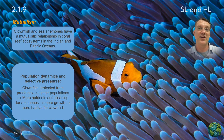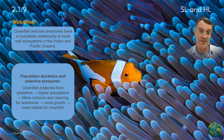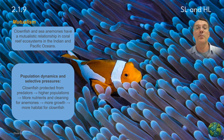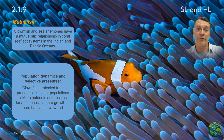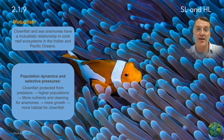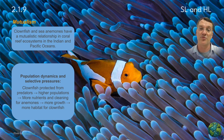A really nice example of mutualism is clownfish and sea anemones. The clownfish are protected by the stinging sea anemones, and the anemones receive additional cleaning and nutrients from the clownfish feces. The clownfish protect the anemones from potential predators and provide additional nutrients for growth, while the anemones protect the clownfish from their predators.